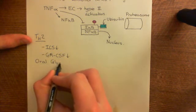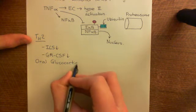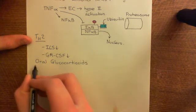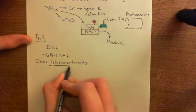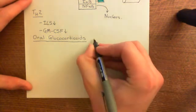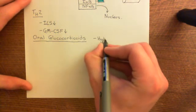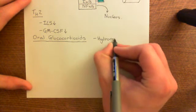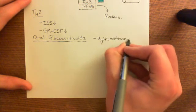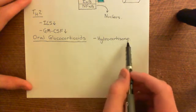Oral glucocorticoids would be reserved for very severe asthma because these are going to produce full-on immunosuppression. So the famous examples are hydrocortisone, which is the same molecule basically as cortisol, which is the endogenous hormone.